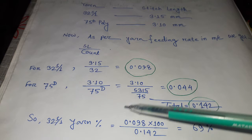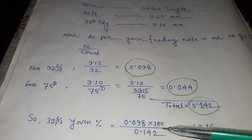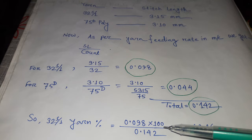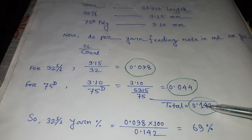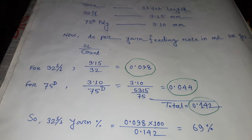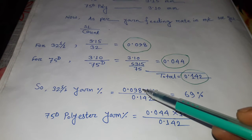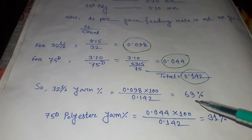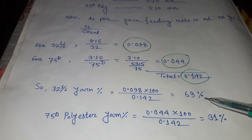32 single yarn ratio 0.098 into 100 because we are calculating in percentage. 0.098 divided by the total value 0.142. Then after multiplication and dividing we get 69 percent. This is the 32 single yarn's percentage.